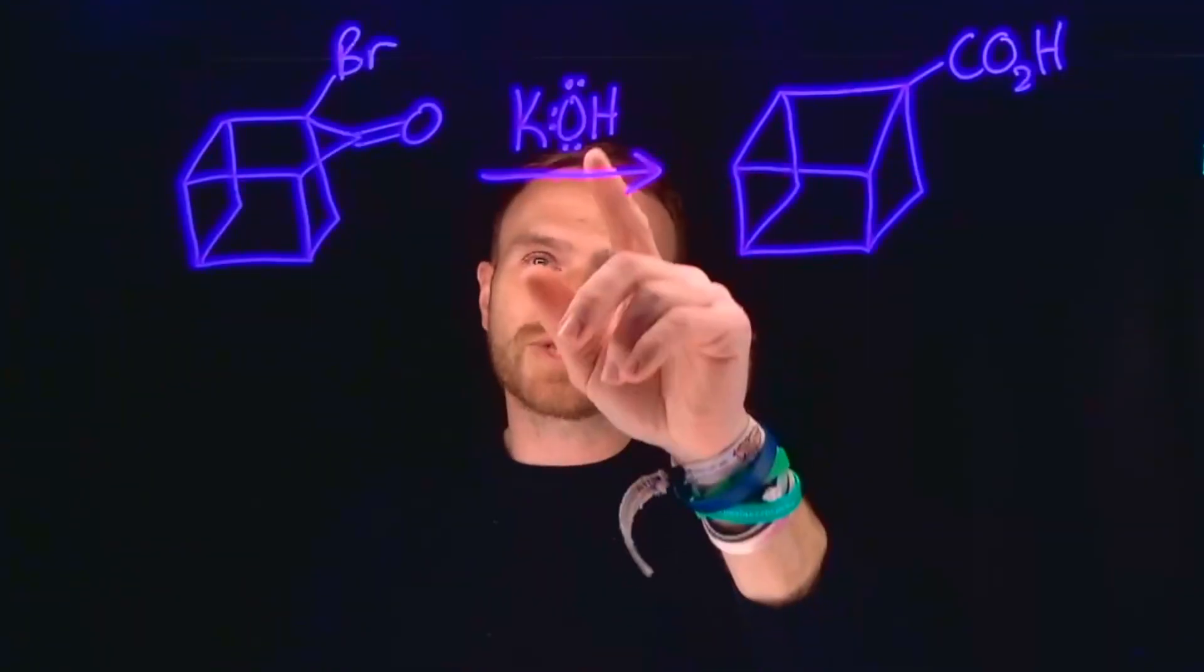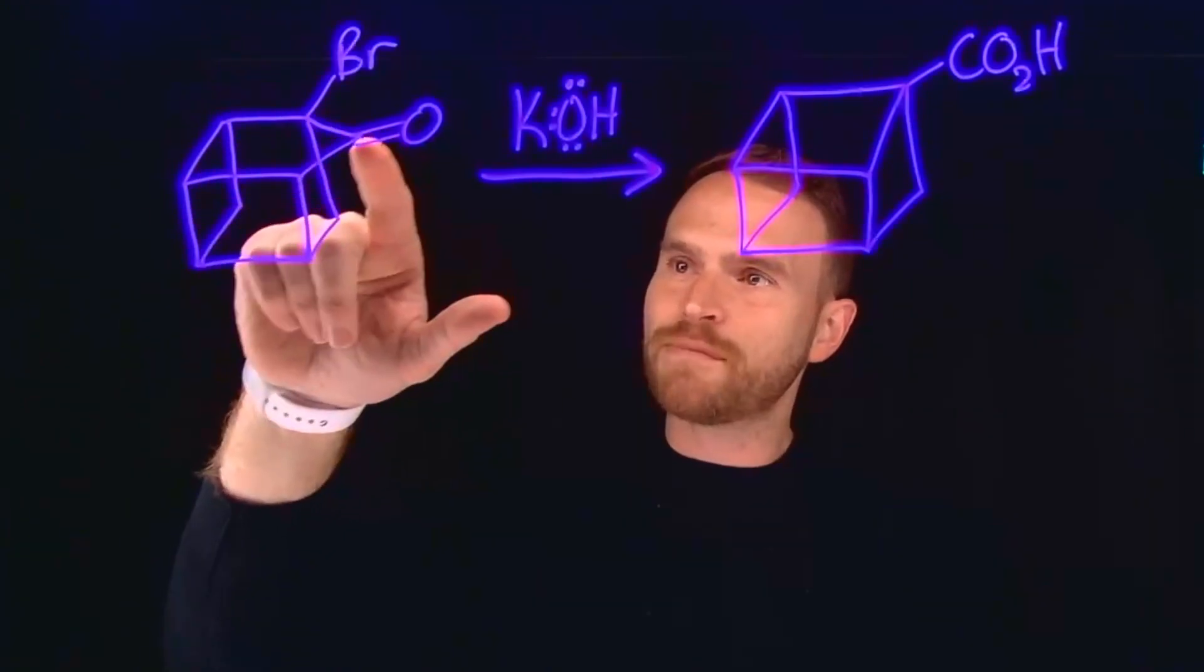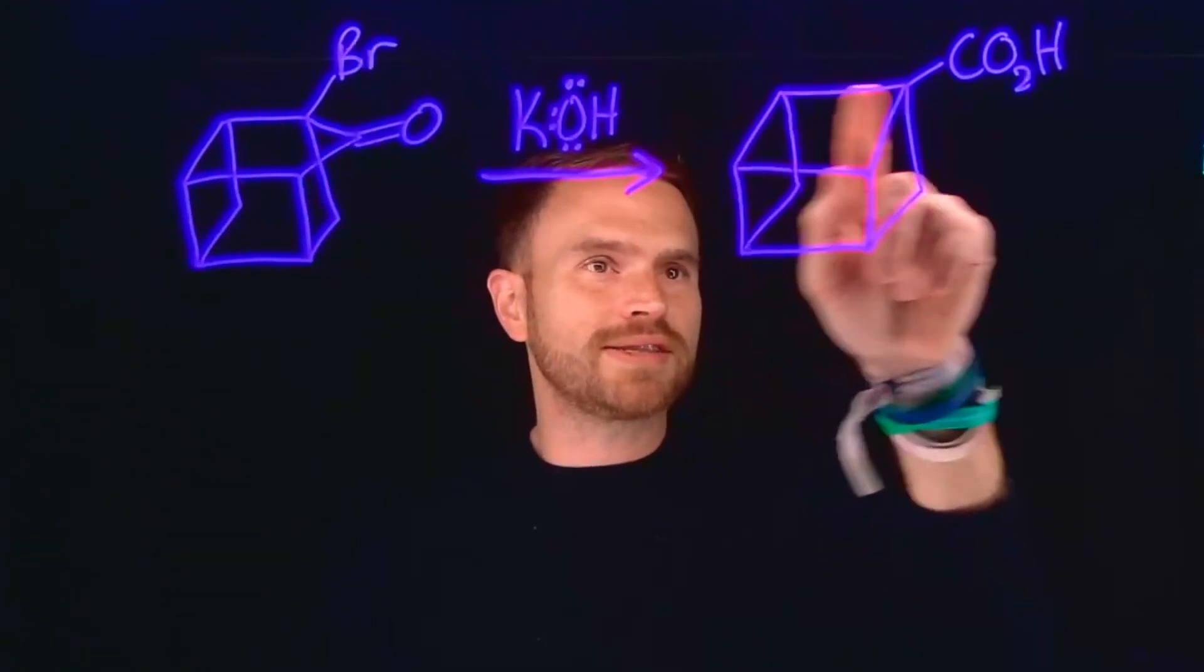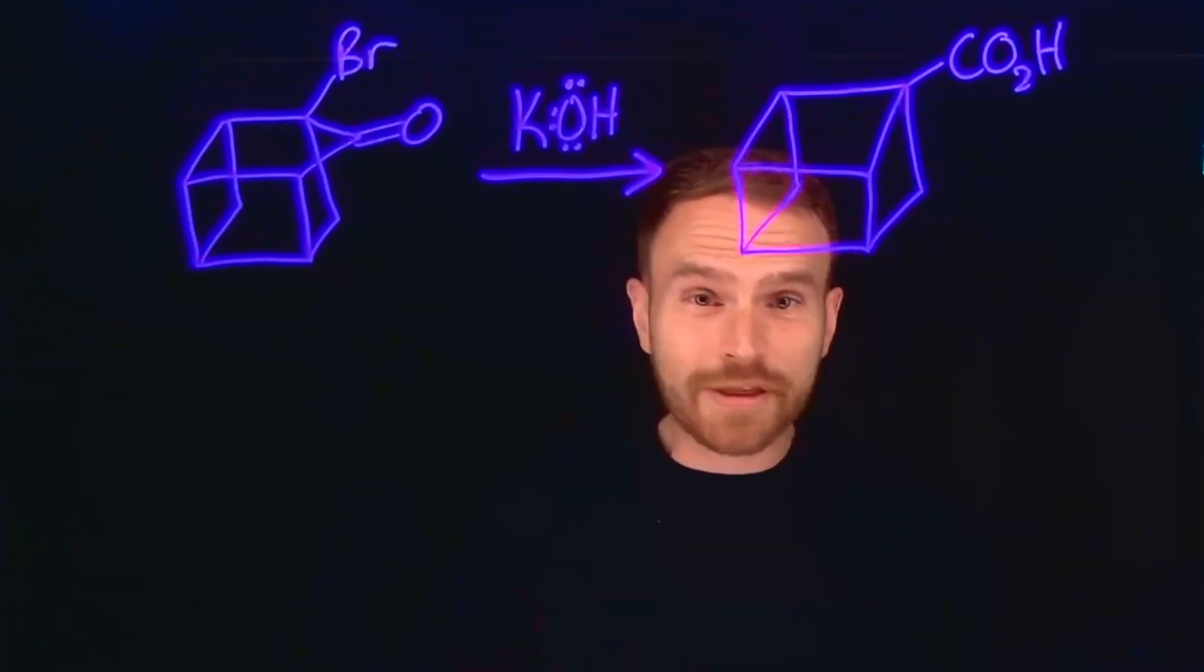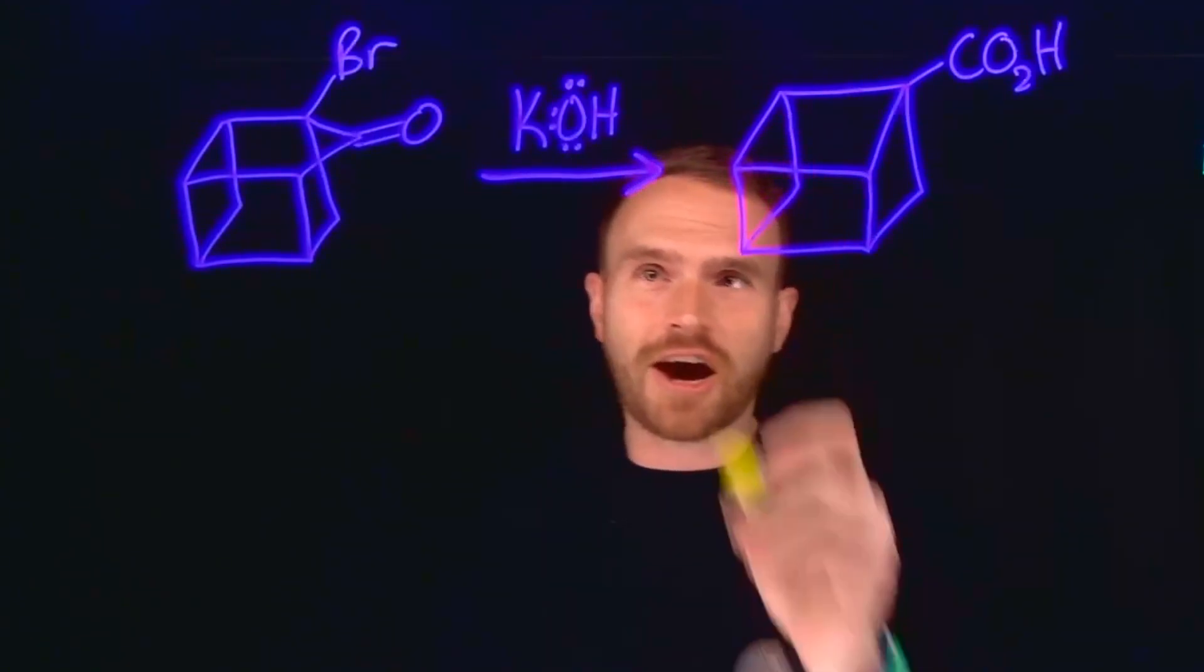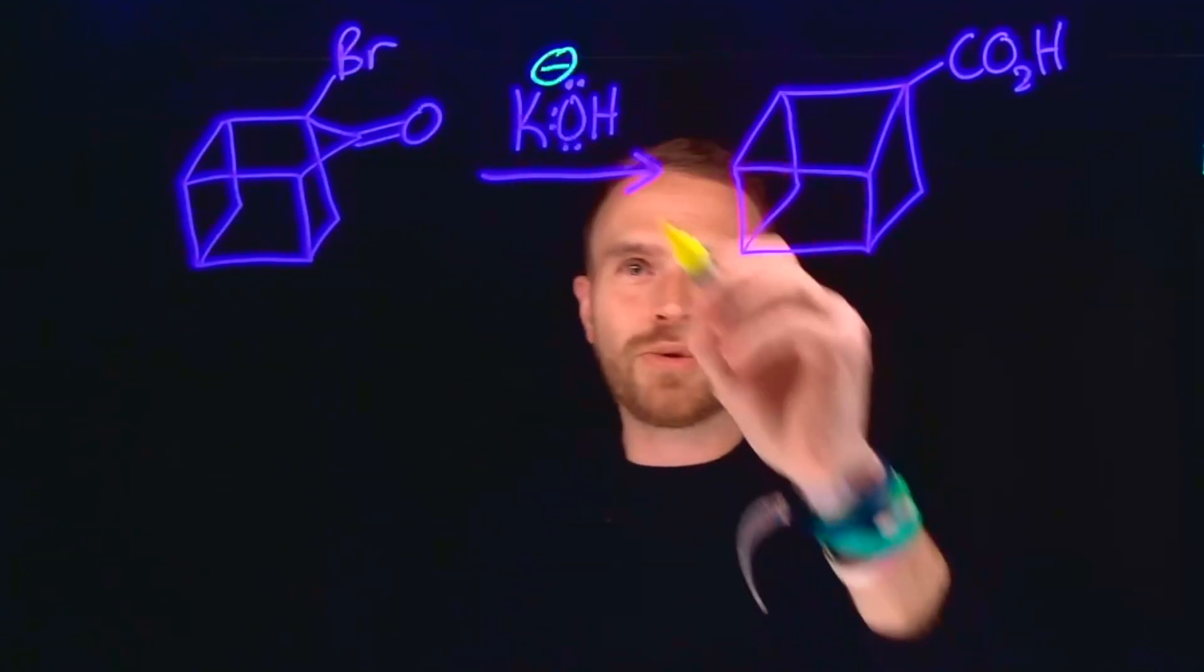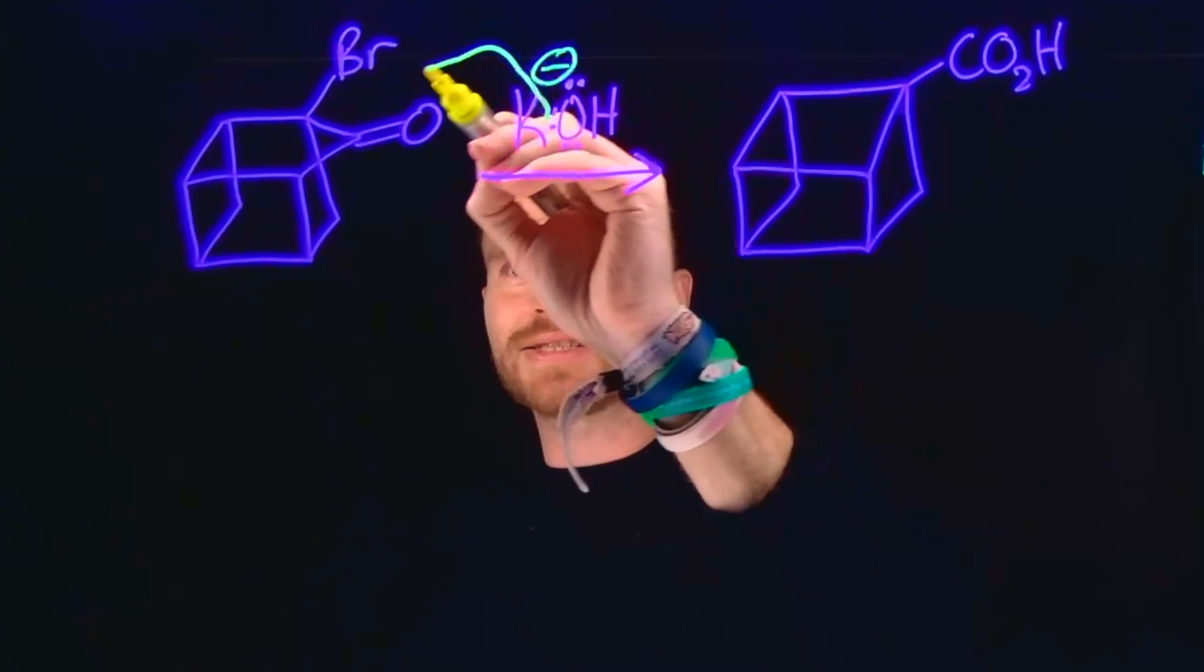In this reaction, we're using a base to do that ring contraction. Notice that this is a five-membered ring at the top, whereas the ending product only has a four-membered ring. The first step is to take KOH, which is an ionic compound that can effectively be thought of as hydroxide. It will come and do a nucleophilic attack at this carbonyl carbon, opening it up and giving us a product.